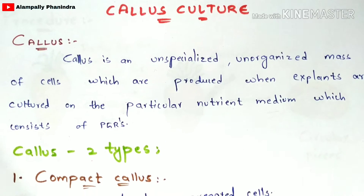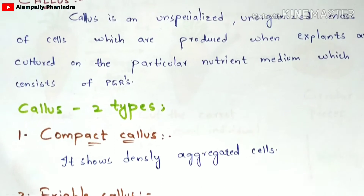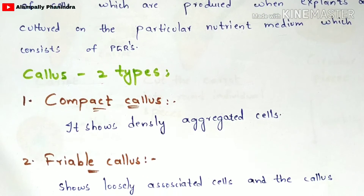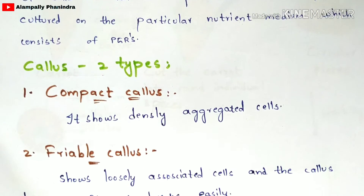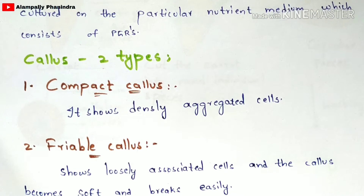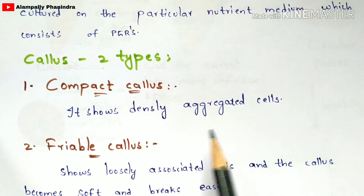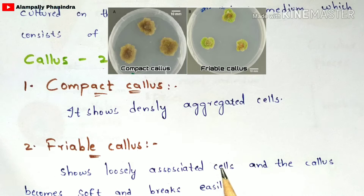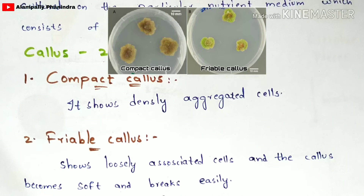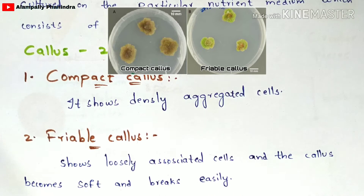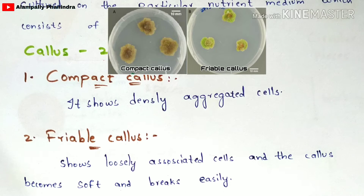Callus is of two types: compact callus and friable callus. Compact callus shows densely aggregated cells, while friable callus shows loosely associated cells — it becomes soft and breaks easily. You can understand the difference from the pictures shown.